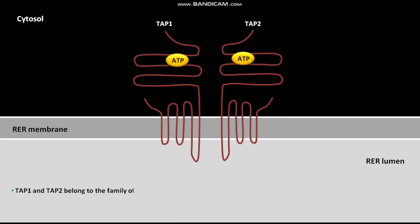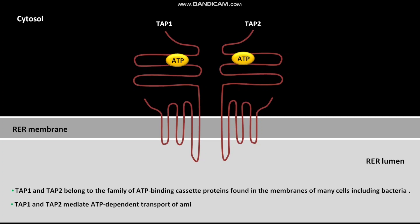TAP1 and TAP2 belong to the family of ATP-binding cassette proteins found in the membranes of many cells, including bacteria. TAP1 and TAP2 mediate ATP-dependent transport of amino acids, sugars, ions, and peptides.